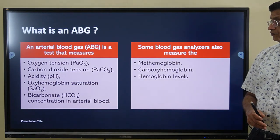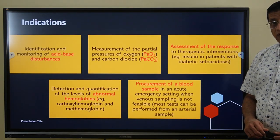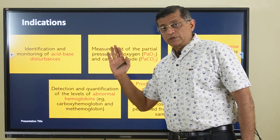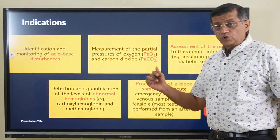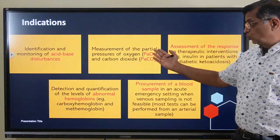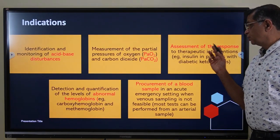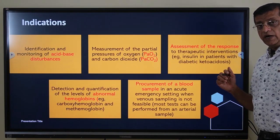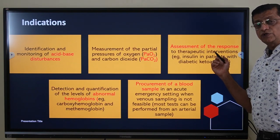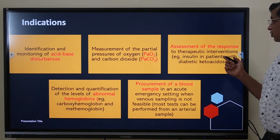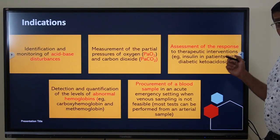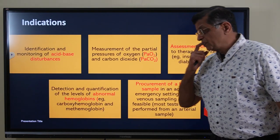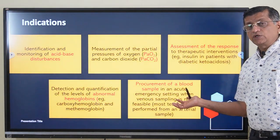The indications for doing an ABG include: identifying acid-base disturbances such as acidosis, alkalosis, metabolic or respiratory and mixed disorders; measurement of partial pressure of oxygen (PaO2) and carbon dioxide (PaCO2); assessment of response to therapies — for example, in ketoacidosis, you continue insulin infusion until pH normalizes even after ketones become negative in urine; detection and quantification of abnormal hemoglobin like carboxyhemoglobin; and sometimes when venous access is not available, an arterial sample can be used.